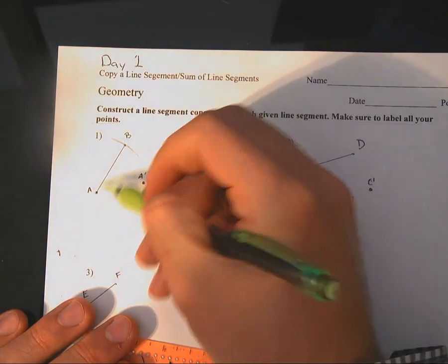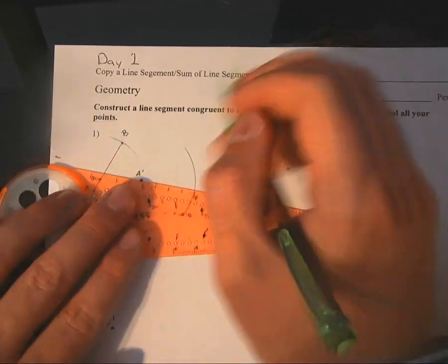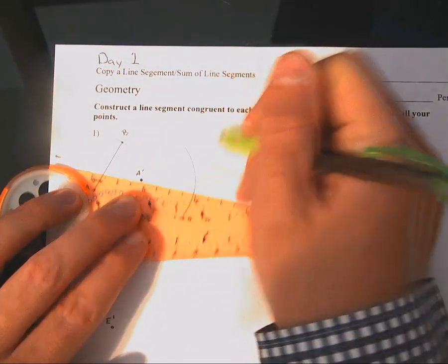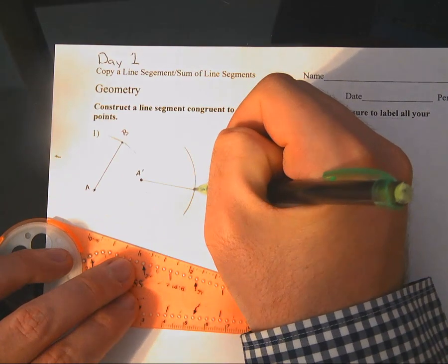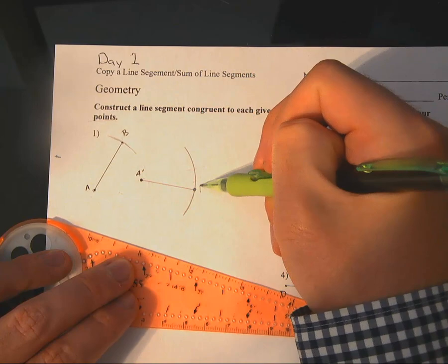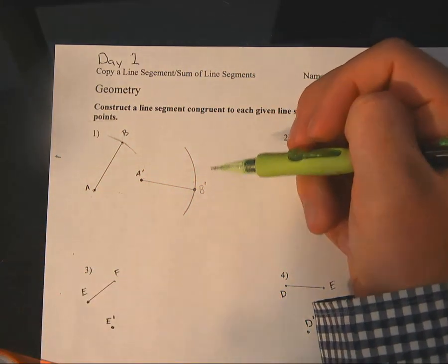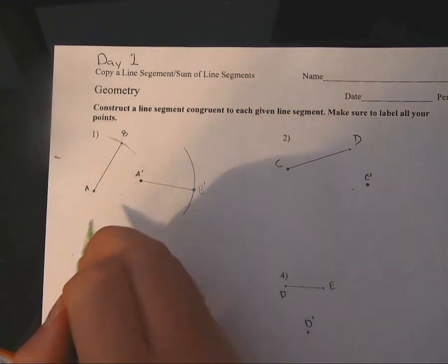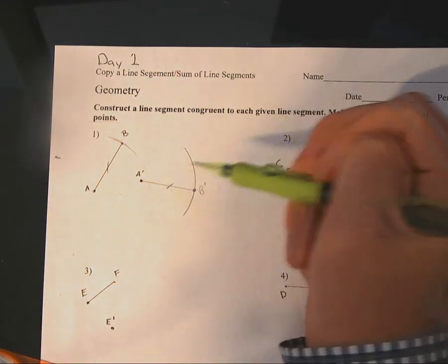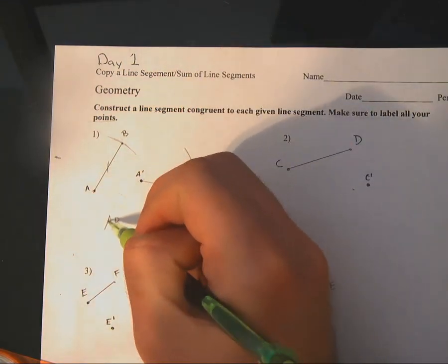So the distance from A to B is going to be the same as A prime to the edge of this circle. Now start at the center, draw a line where those two points meet or intersect. We're going to call that B prime. You can actually label it whatever you'd like, as long as your notation is good. That notation would be that this segment here is congruent to this segment right here—the line segment AB is congruent to the line segment A prime B prime.